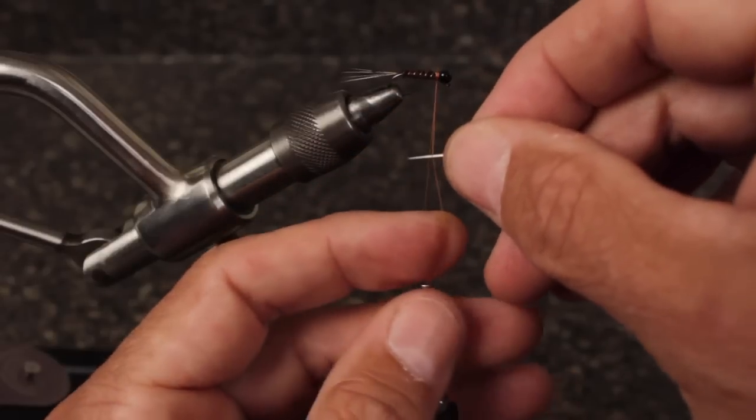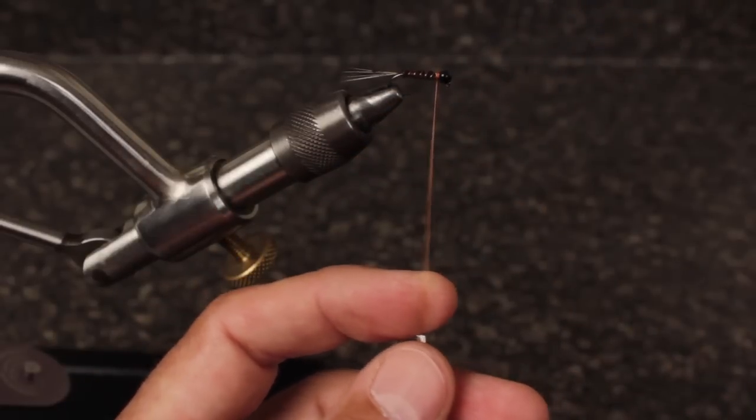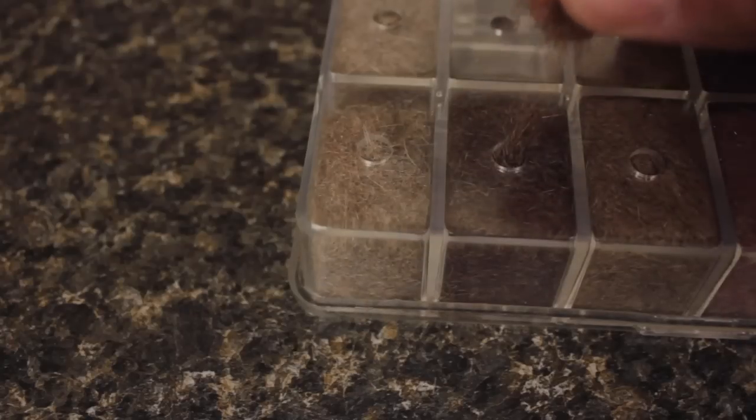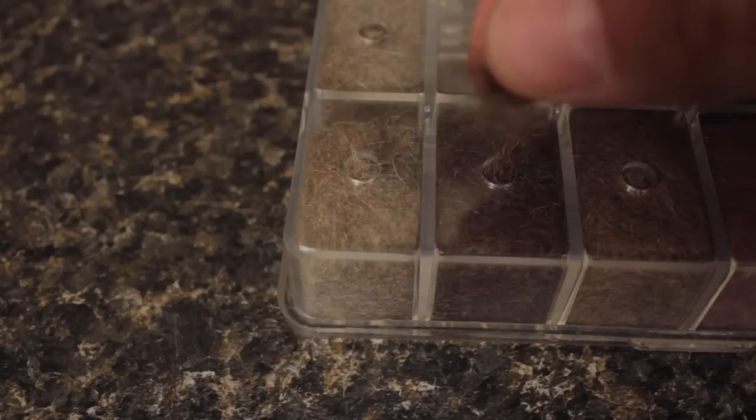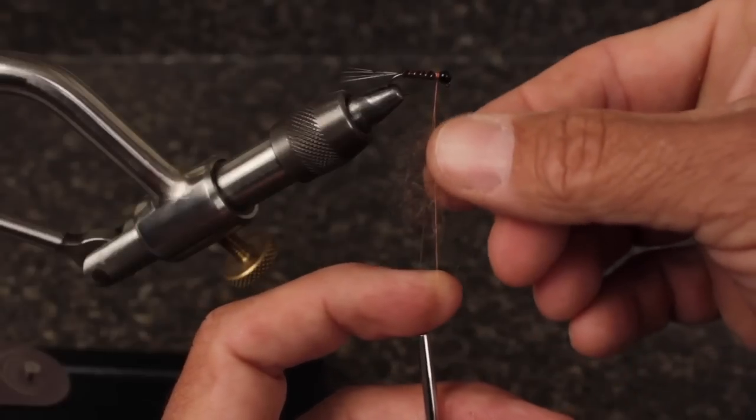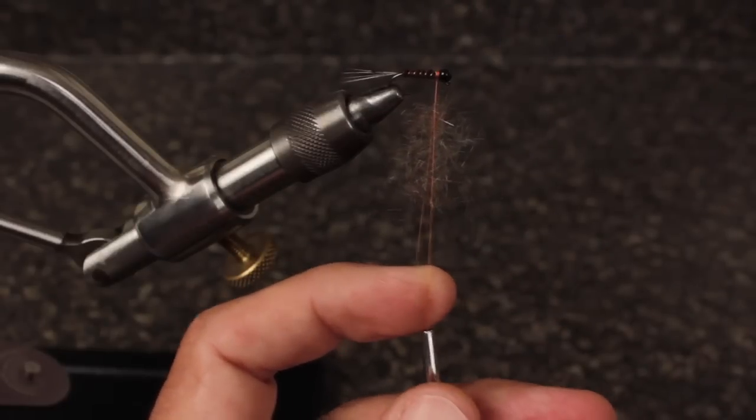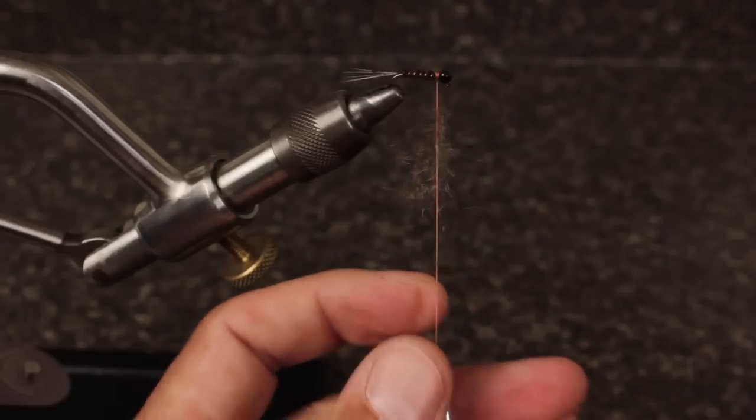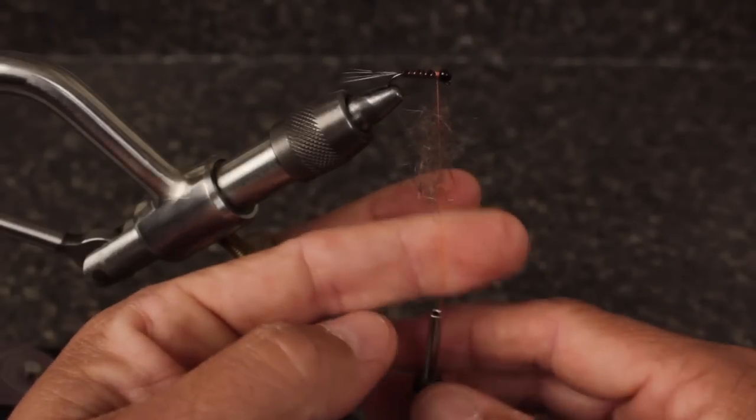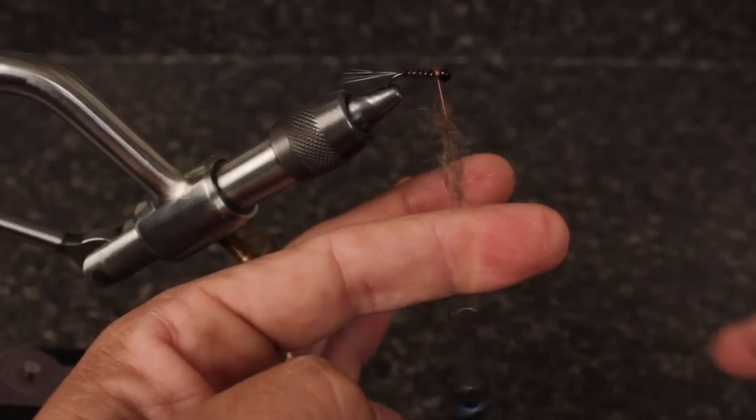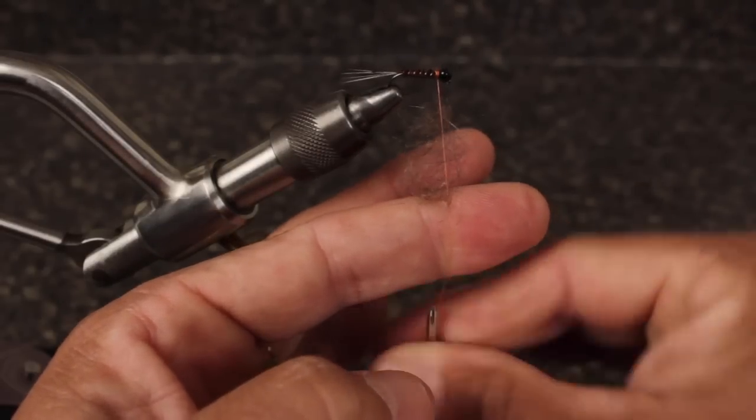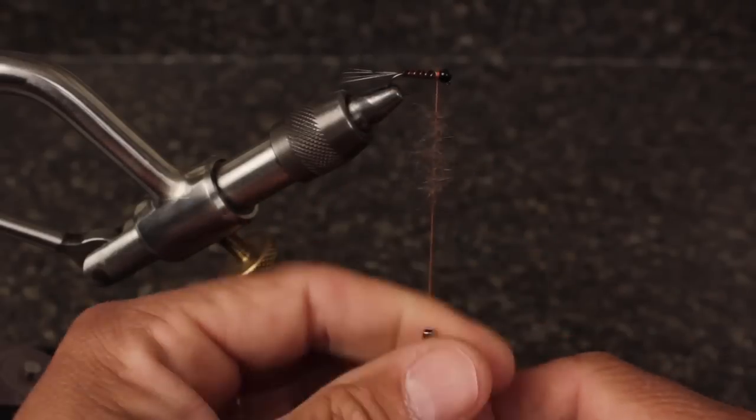Insert the index finger of your left hand between the two strands to keep them separated. Get hold of just a small pinch of dubbing and place it between the two strands. You don't need much at all. Close the strands to sandwich the fibers and then give your bobbin a few really good clockwise spins. This will cord up the thread and firmly trap the dubbing in the process.